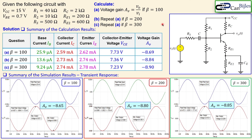This concludes example four of the BJT amplifier series using the NPN BJT with a partially bypassed emitter resistor, demonstrating stable voltage gain design. We will continue with example five, which expands the circuit by connecting a load resistor and examining its effect on voltage gain. If you have any questions about this or previous examples, please ask and I will answer as soon as possible. See you next time — take care.